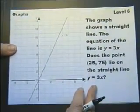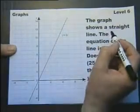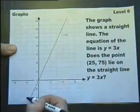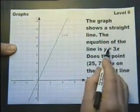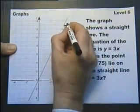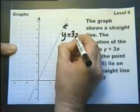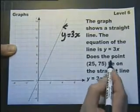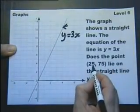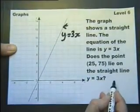Let's look at a graph. The graph shows a straight line. It most certainly does. The equation of the line is y equals 3x. So I've actually been told that the equation of this line is y equals 3x. Does the point (25, 75) lie on this straight line?